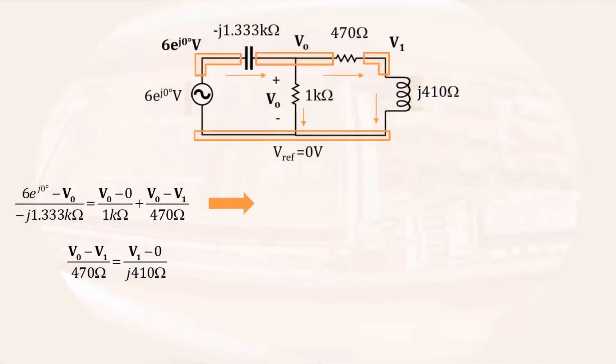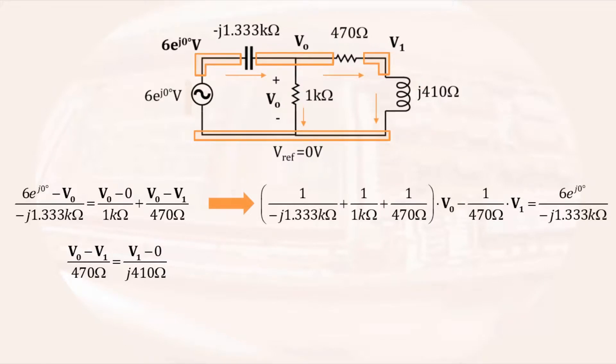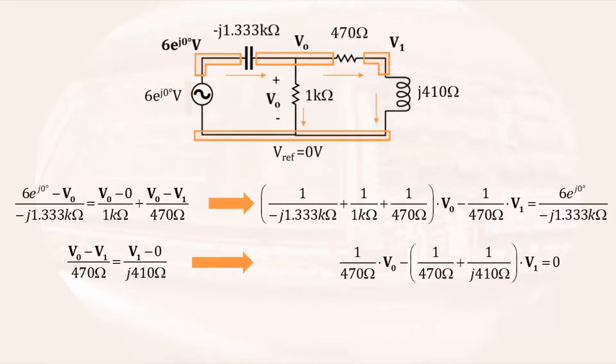Now we're past the circuit analysis point of this procedure. We are left with just complex algebra. Unfortunately, the mathematics professors at my institution will tell me that algebra is our weakest point. One of the best ways I can think of to avoid algebraic mistakes is to do as little algebra as possible. I'm going to begin and end my algebraic manipulation of these equations by pulling out the coefficients that multiply each of the variables. I'm not even going to do the complex arithmetic. One of my objectives here is to minimize the number of algebraic mistakes I can make.